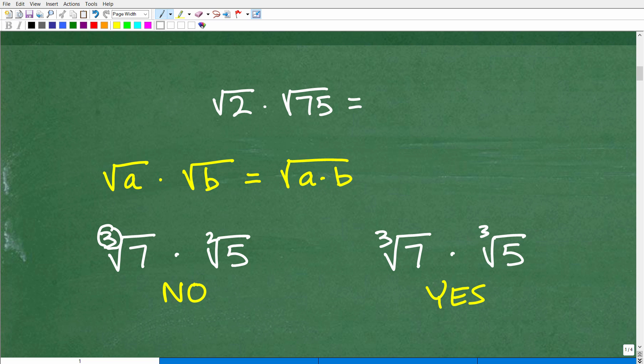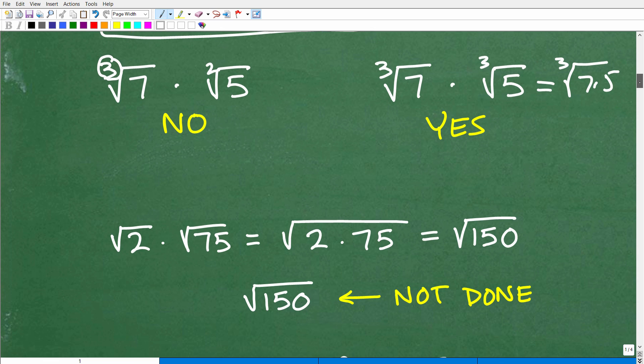So this rule only applies when you're dealing with the exact same radical. In other words, if I had the cube root of 7 times the cube root of 5, could I apply this rule? Yes, so this rule applies not only to square roots, but in this situation as well. This would be the cube root of 7 times 5. So again, this is a property of radicals you need to know and not be confused with.